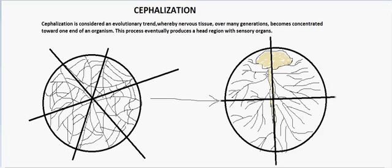You might argue that the brain is internal and symmetry is based on external appearance only — and you are right. We ourselves are bilaterally symmetric externally, but internally the heart and liver are shifted to one side. However, along with the concentration of nervous tissue towards one side, sensory organs like eyes and ears are also concentrated there, creating an anterior end on that side and a posterior end on the other.